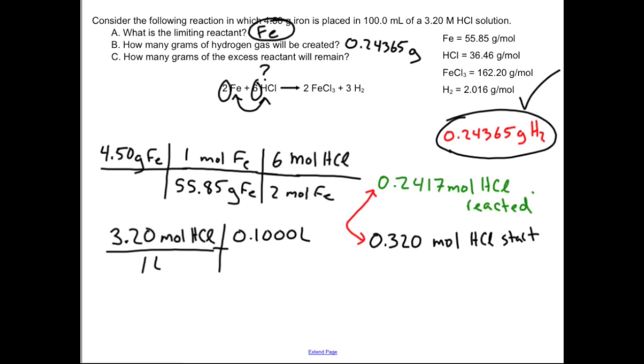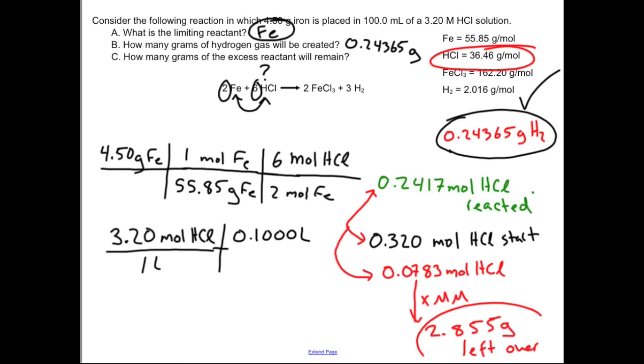So the difference in these, that is how much I am going to have left over. The difference in those two numbers is 0.0783 mole HCl. Then I would multiply that by the molar mass of HCl, which is right here, and I get 2.855 grams. And that is left over. So that is the final answer for part C.